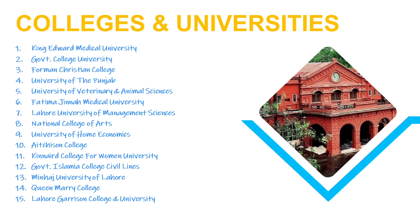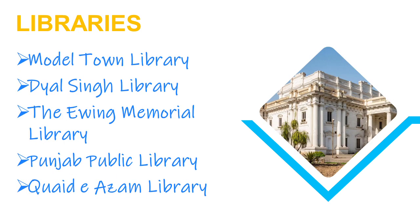Next is National College of Arts, or NCA, established in 1875. Next is University of Home Economics, established in 1955. Next is Aitchison College. Next is Kinnaird College for Women University. Next is Government Islamia College Civil Lines. Next is Minhaj University of Lahore. Next is Convent Mary College. Next is Lahore Garrison College and University.